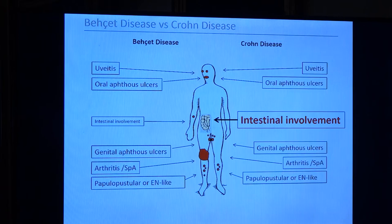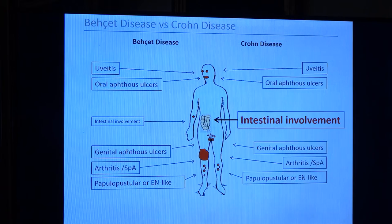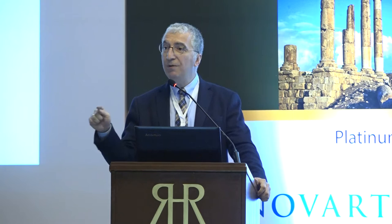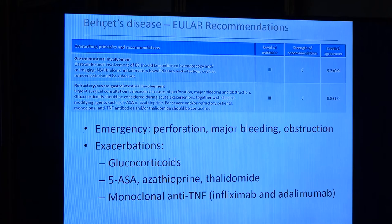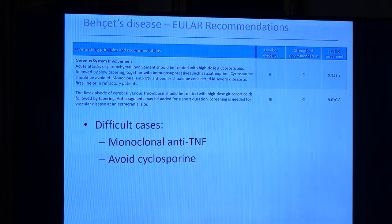For GI involvement, the most critical issue is differential diagnosis with Crohn's. In Crohn's disease, you can see uveitis, oral ulcers, even genital ulcers, erythema nodosum, arthritis, and GI lesions — so if you are not experienced with Behçet's disease, especially in countries where it is not prevalent, several Crohn's patients can be diagnosed as Behçet's and vice versa. Uveitis is quite helpful, and the presence of typical vascular or neurologic manifestations and a positive pathergy test may also help. For GI lesions, we use glucocorticoids when necessary, azathioprine, thalidomide, 5-ASA, and infliximab and adalimumab are also effective.